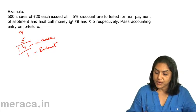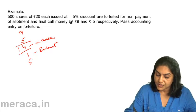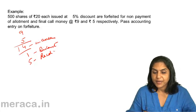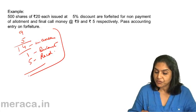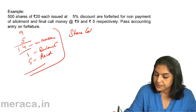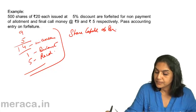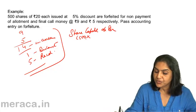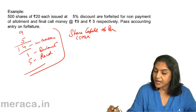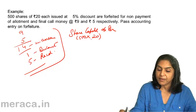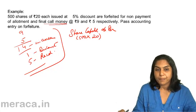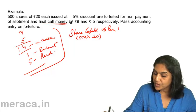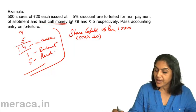Therefore, the money which must have been received is Rs 5 per share — paid by the shareholder. Now, the accounting entry on forfeiture: share capital account is debited with the called-up value into the number of shares — 500 shares into Rs 20. Since the final call was also made, the shares are fully called up. So, share capital account debit is Rs 10,000.